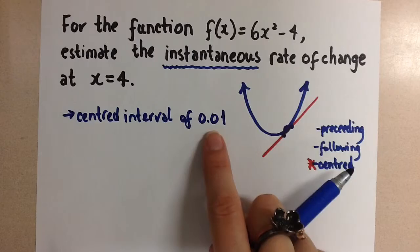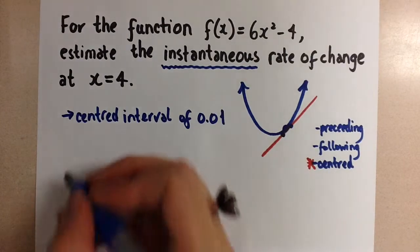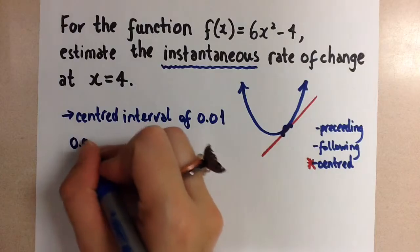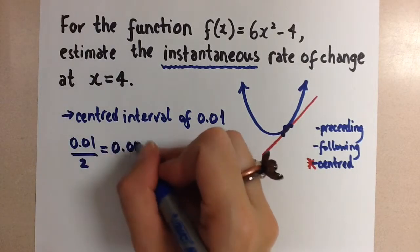0.1 would be a little too large because a lot of our questions ask us to round to the nearest hundredth, so that wouldn't be accurate enough. So we're going to go with 0.01. To find the centered interval, we take that 0.01, divide it by 2, which gives us 0.005.